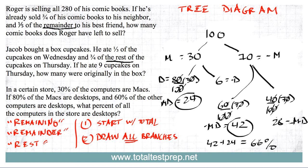To recap: if you see word problems with fractions or decimals and the keywords 'remaining,' 'remainder,' or 'rest,' the easiest thing to do is make a tree diagram. And sometimes even if you don't see those keywords, you can still make a tree diagram. You can make a tree diagram whether you know the total, or know some part and can figure out the total, or aren't given any concrete numbers but can pick your own.